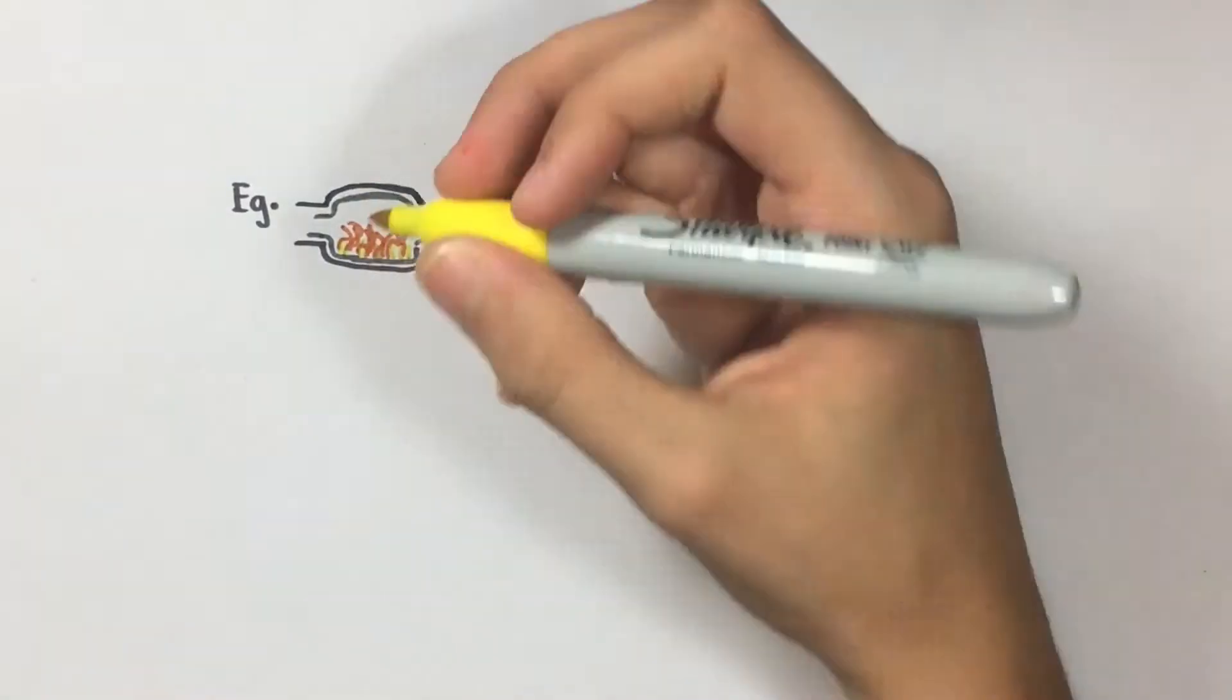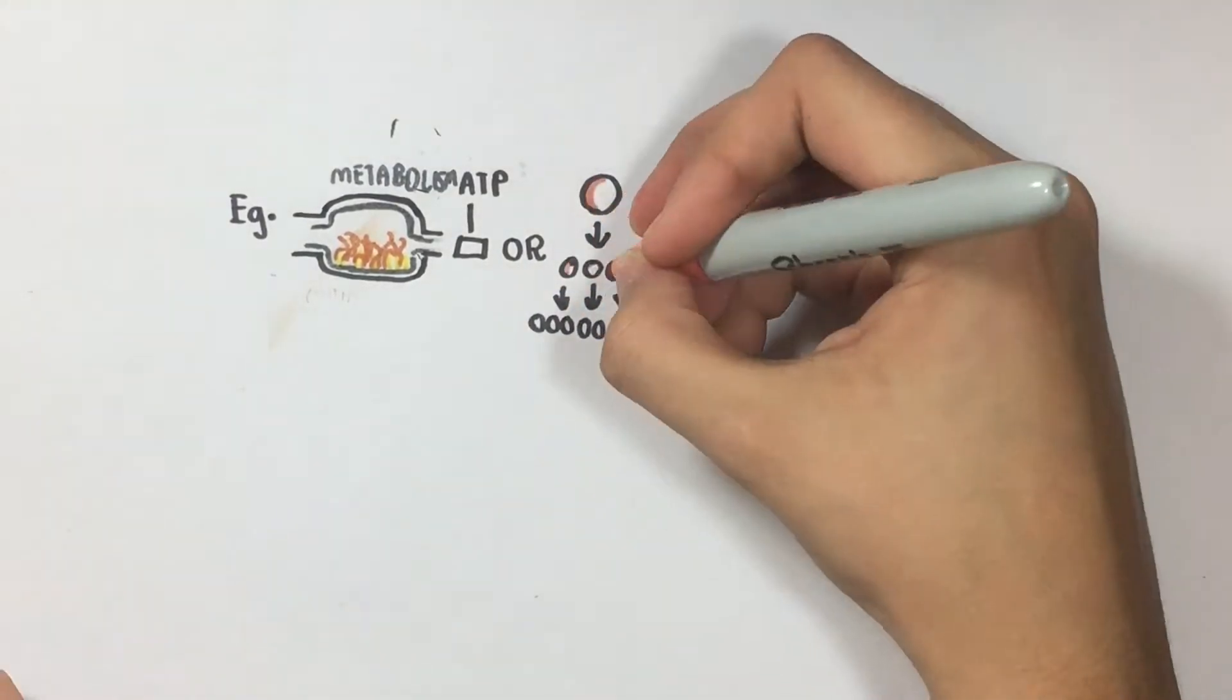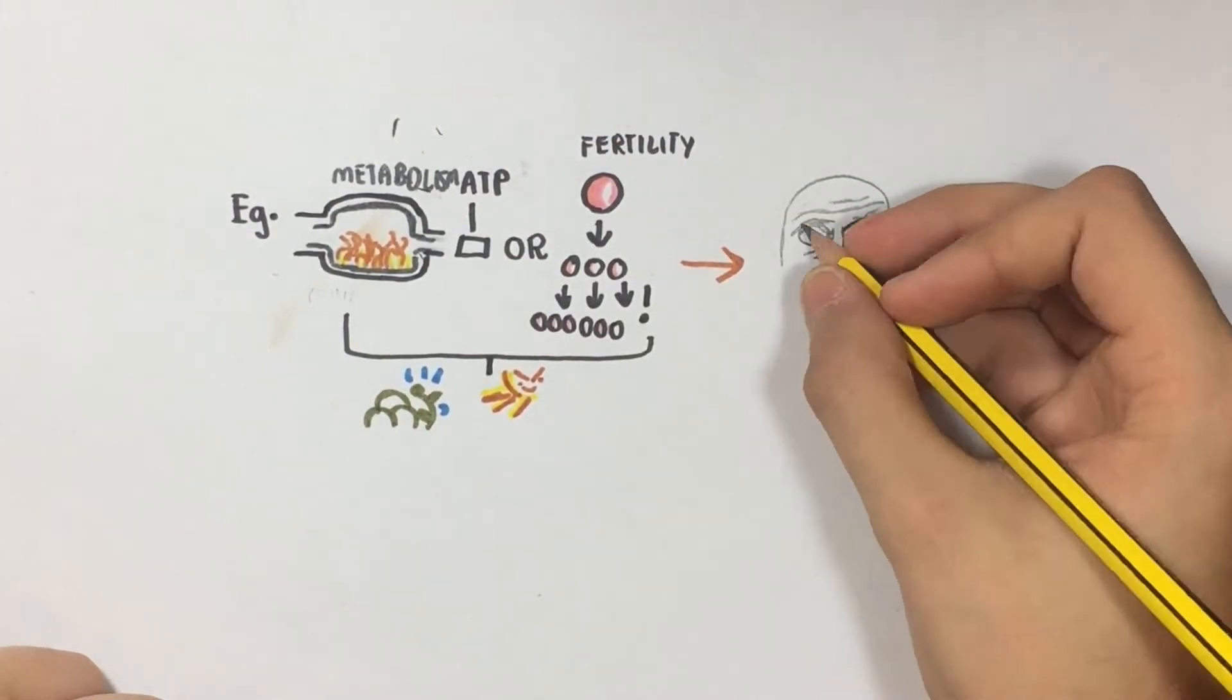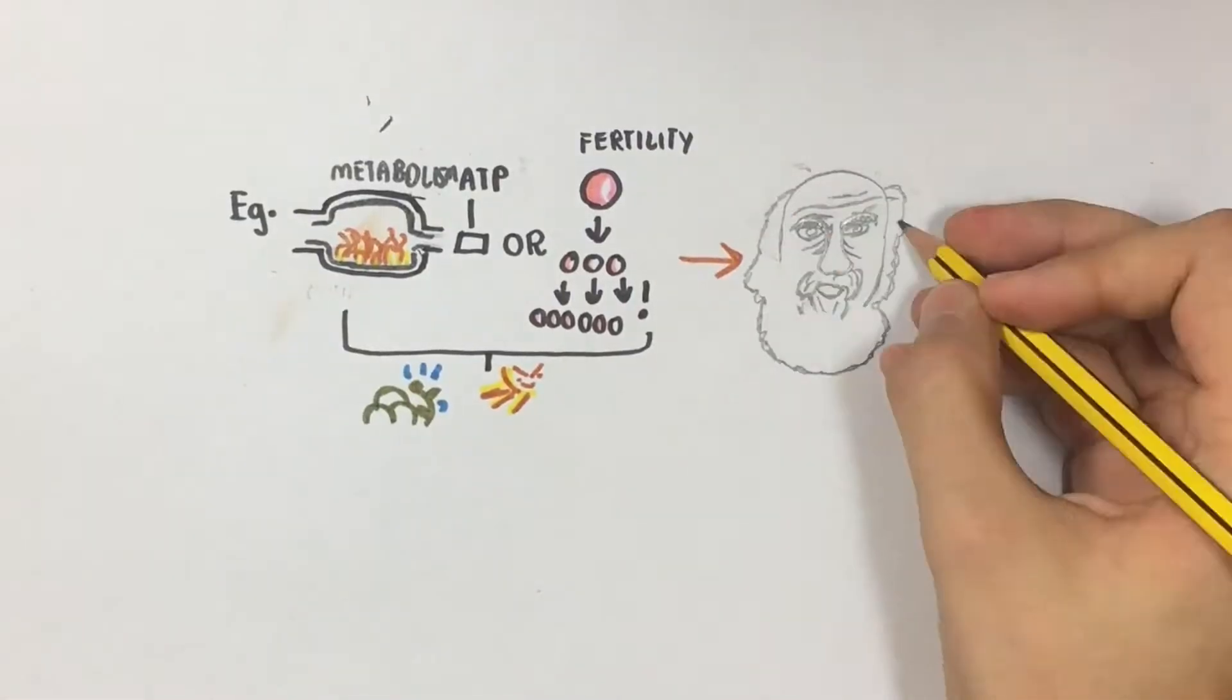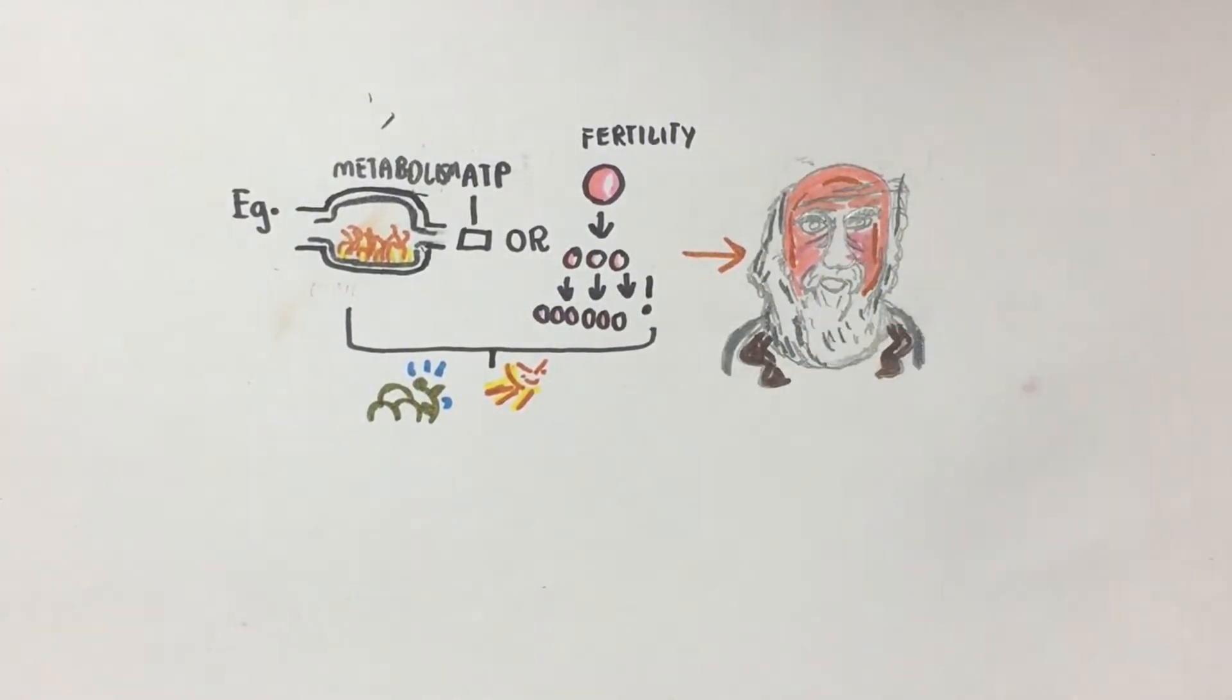A good example of this would be an organism's metabolism or its fertility rate. The change in phenotype is due to effects of the environment that the organism lives in. A fun fact for you: variation was first reported by Charles Darwin and Alfred Wallace.